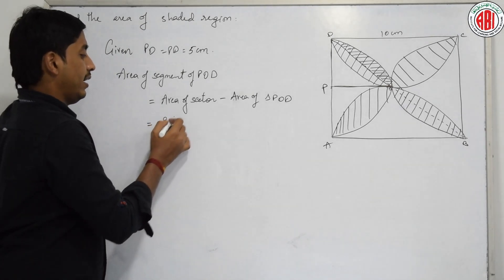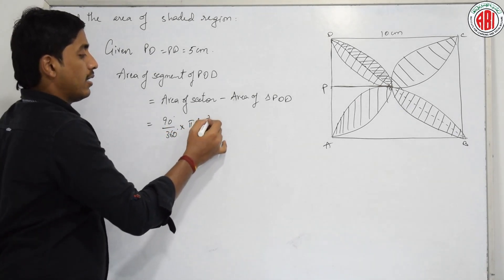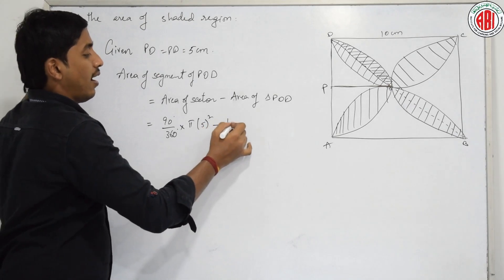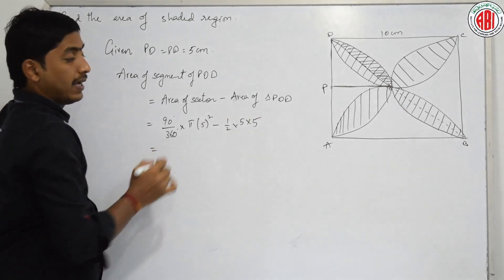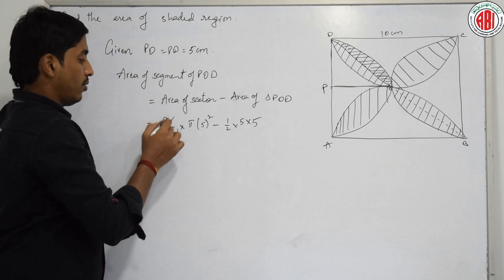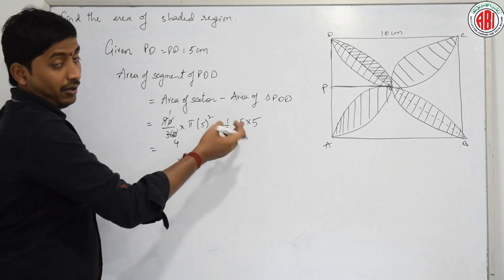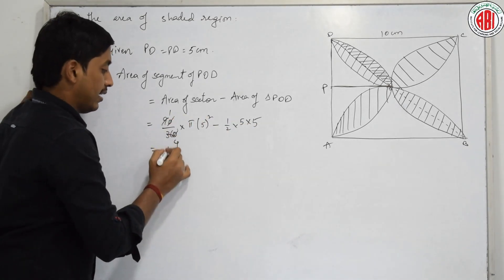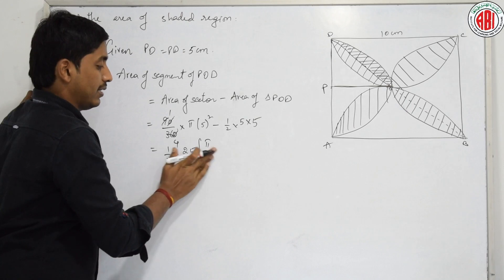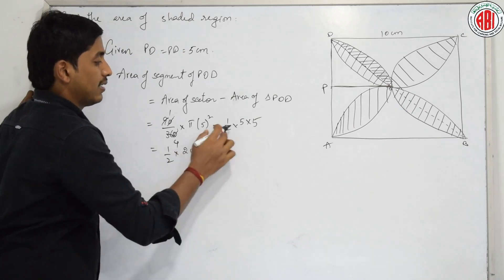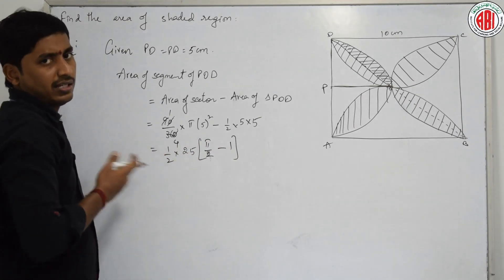That is 90 by 360 into pi, R square, minus area of triangle which is half into base 5 into height 5. That is half into 5 into 5. Now let us cancel and simplify. Can I take 1 by 2 into 25 as common? I am left with pi by 2 minus 1. That is 25 by 2 into pi by 2 minus 1.